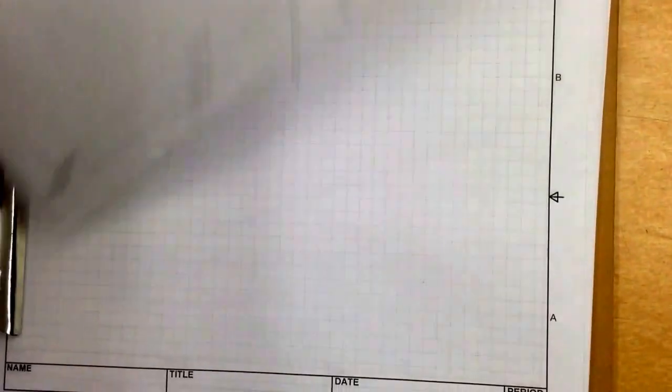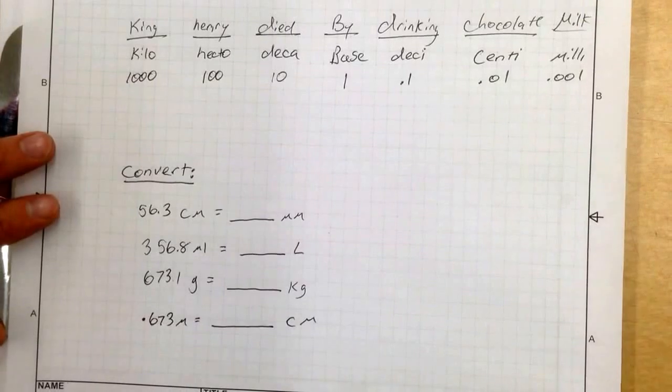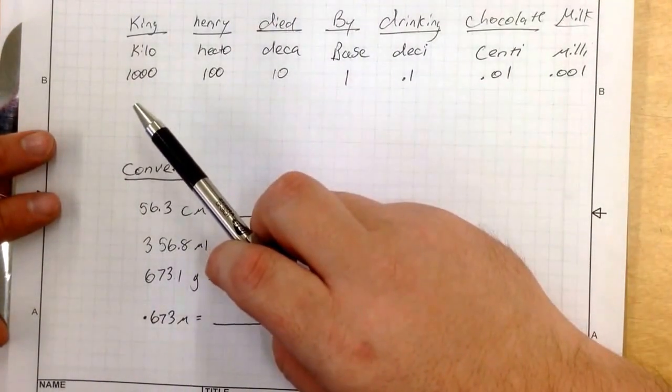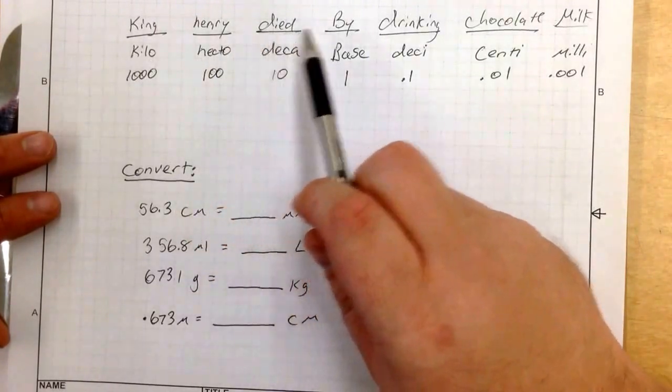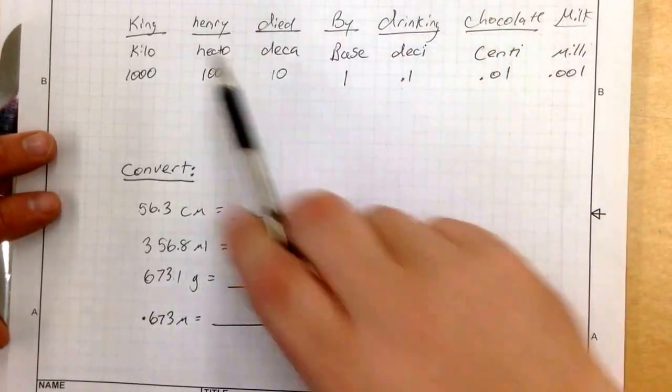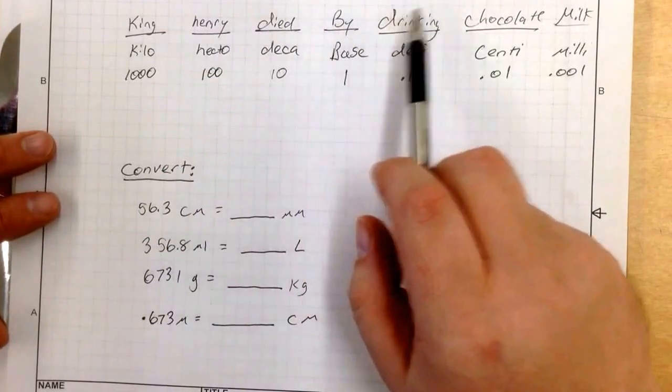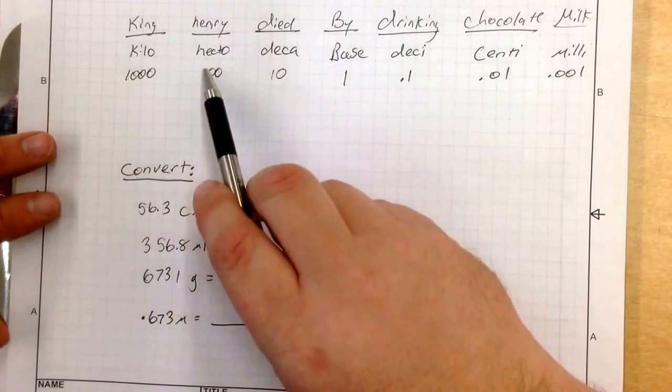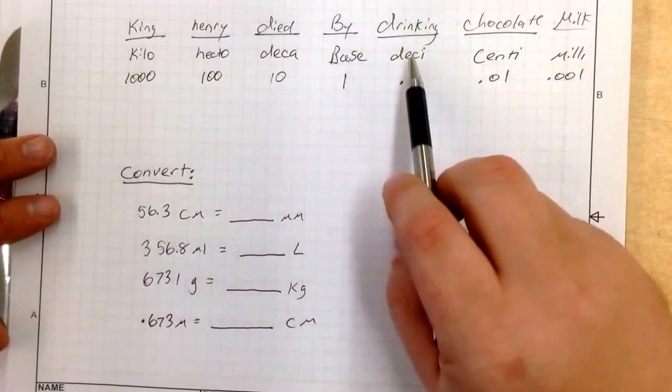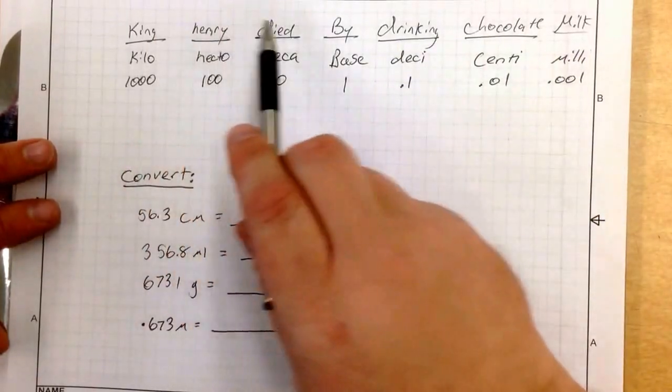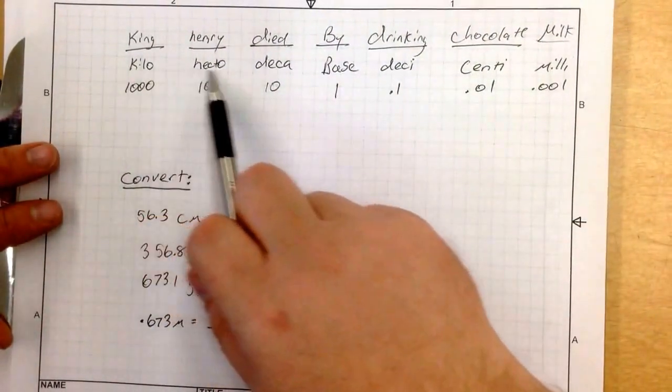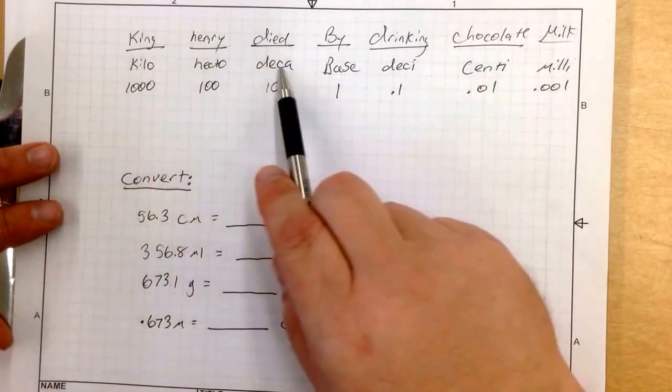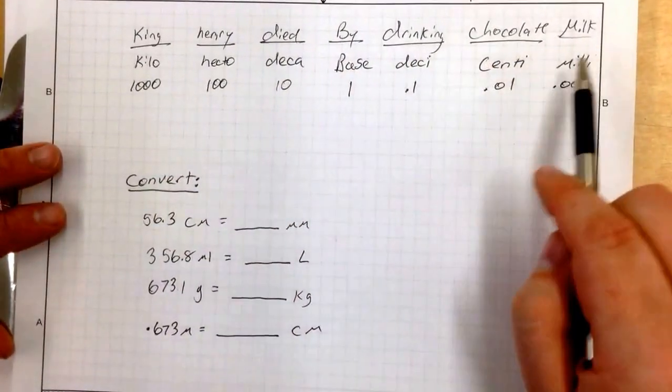Let me switch papers right here. And that is by coming up with a mnemonic device. And the mnemonic device for this is King Henry died by drinking chocolate milk. King Henry died by drinking chocolate milk. Kilo, hecto, deca, base, deci, centi, milli. King Henry died by drinking chocolate milk. If you remember that phrase, you're going to remember how this goes. Kilo, hecto, deca, base, deci, centi, milli.